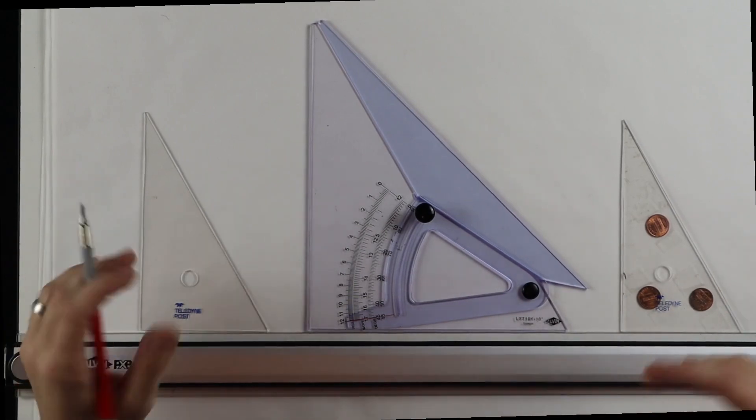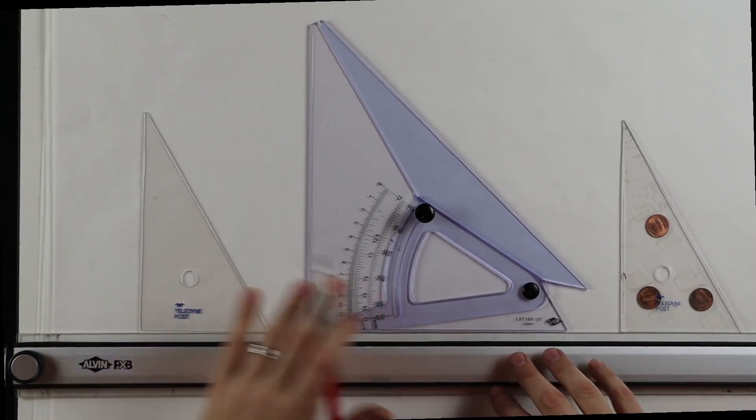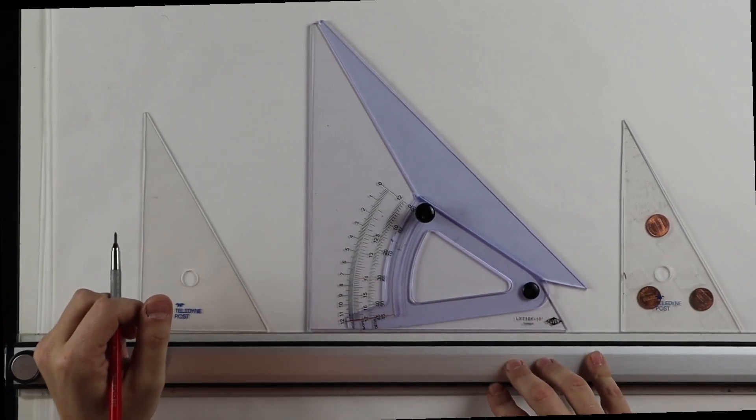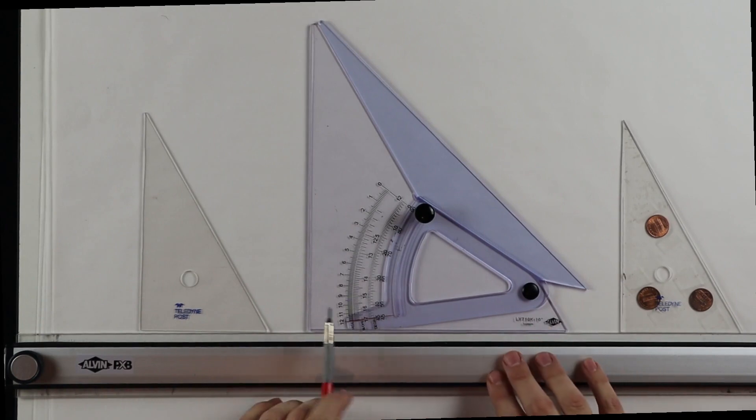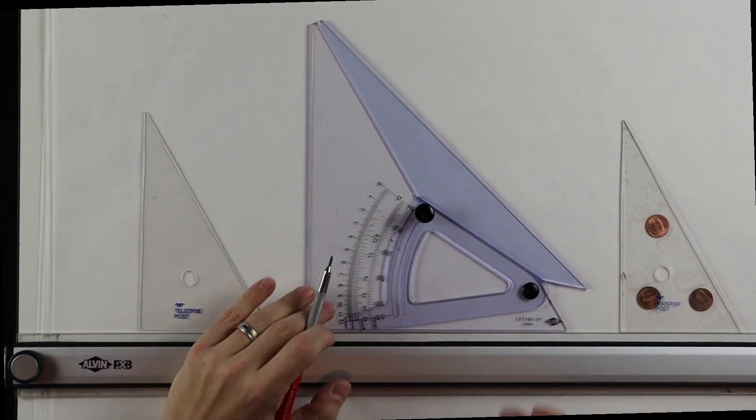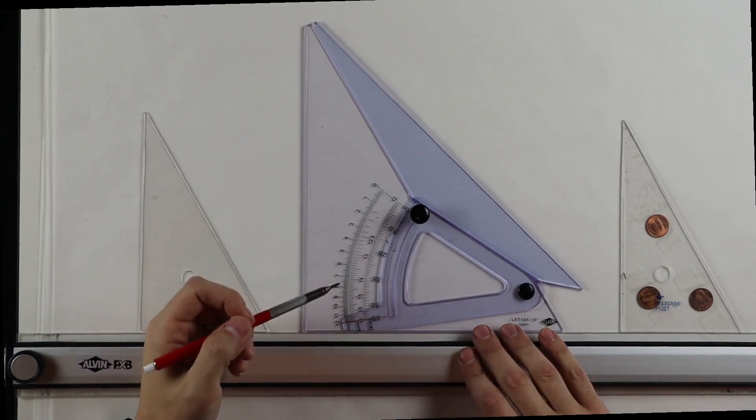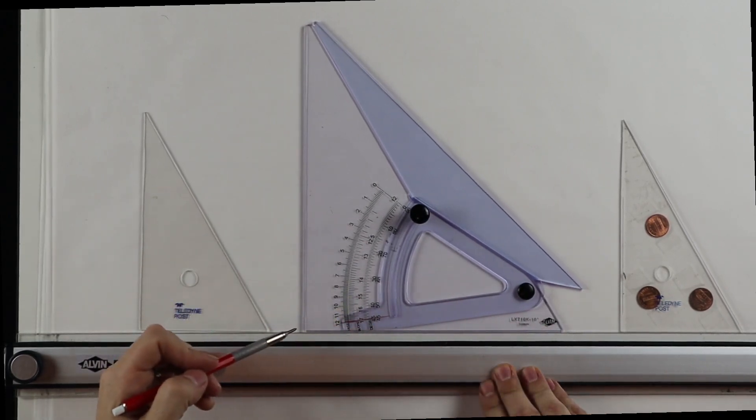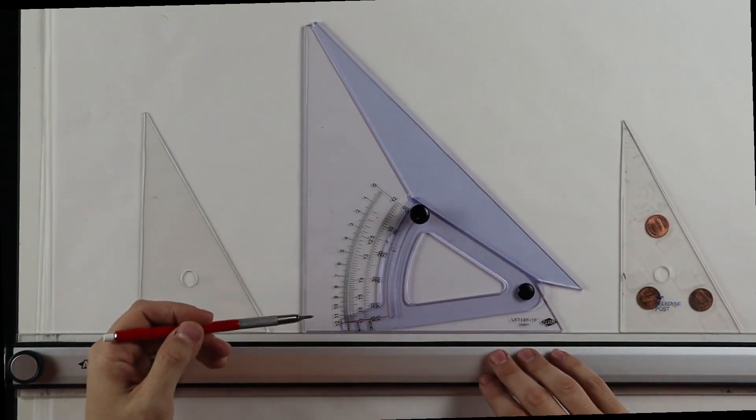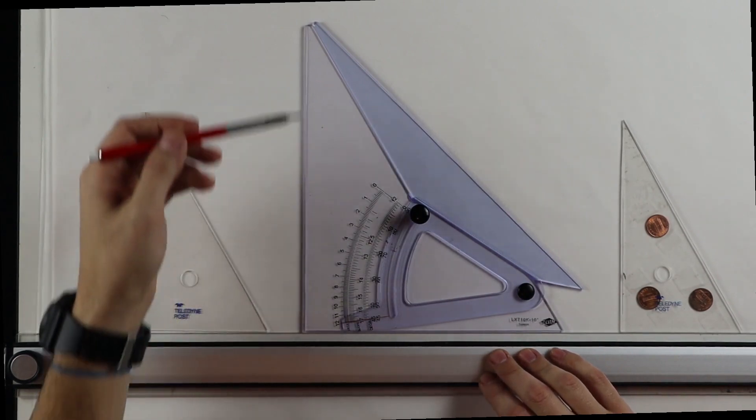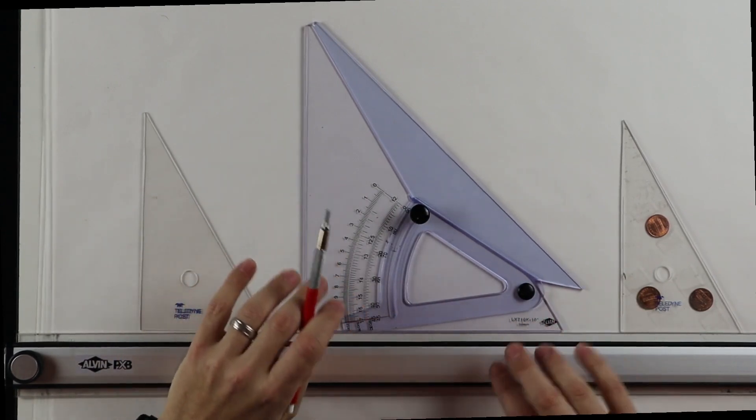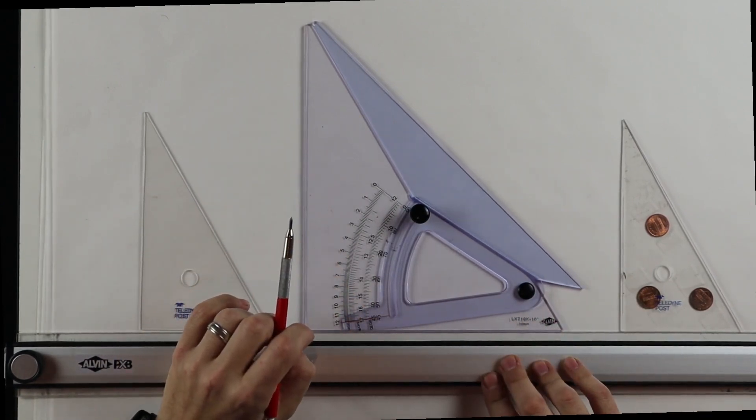Okay everyone, so here I have my adjustable triangle along with a couple just normal triangles to show you a comparison between them. Basically the adjustable triangle, also sometimes called a set square, has a few elements on it. The first is it comes as a standard in its traditional conventional position as a 45, 45, 90. So you have the 90 degree angle here, 45 and 45. So it can work just as a standard triangle if you want it to.